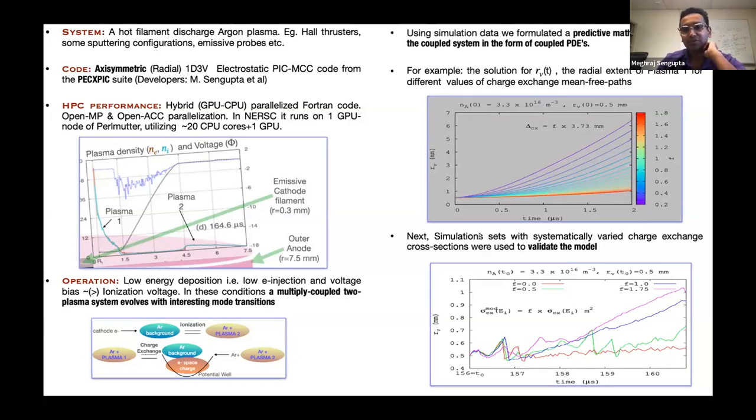And next we use simulation sets. We wanted to validate this model. So we again use the simulations to validate the model. And we basically artificially enhanced or decreased the charge exchange collision cross-section using a similar parameter called F. And we found that this simulation and the theory and the model that we developed have good quantitative agreement. There are some quantitative differences and the differences are also well understood in terms of effects which are included in the simulation, but are not quite included in the theoretical model.